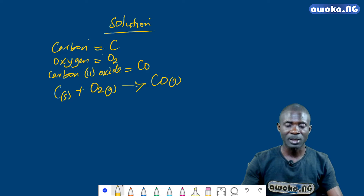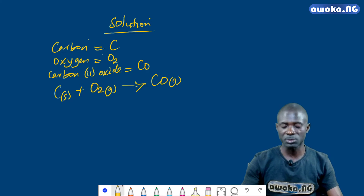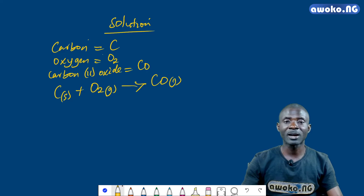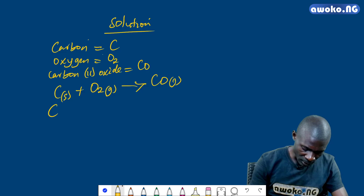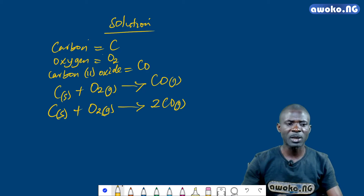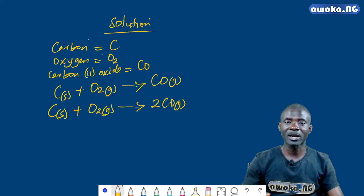Now let's take a look at oxygen. The oxygen on my left-hand side is made up of two atoms, while the right-hand side has one atom. To balance the number of oxygen in the equation, I will simply introduce two moles of CO on the right-hand side, giving C (solid) plus O2 (gas) to produce 2CO (gas).